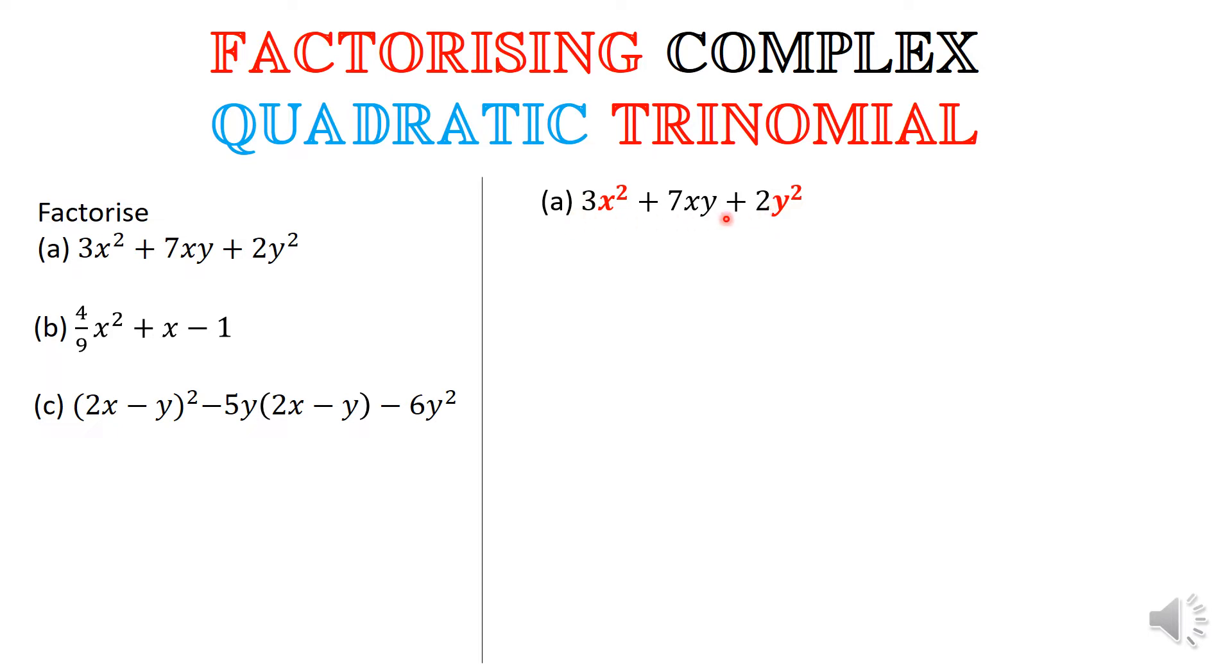That is the ac in the quadratic standard form. So 3 times 2 gives you 6. So what you are essentially looking for is two numbers that multiply together give you 6. And when they are added together they will give you the 7 right here. So I have the number 6 times 1. Take note that 6 times 1 is 6. And 6 add one more gives you 7.